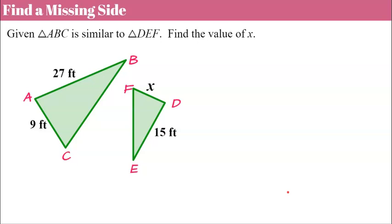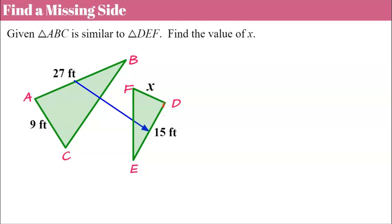Now let's use the idea of similar figures to find a missing side length. It is stated that triangle ABC is similar to triangle DEF, and we are asked to find the value of X. Be very careful, because the orientation of this triangle is turned. Remember the trick about how it's named: side AB corresponds to side DE, so AB is 27 feet and that corresponds to DE, which is 15 feet. Then AC is labeled 9, and AC corresponds to DF, so 9 corresponds to X.